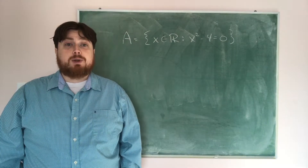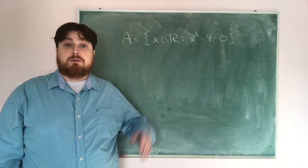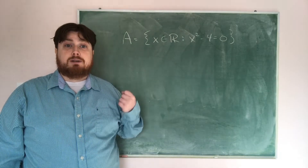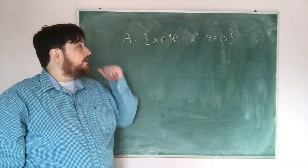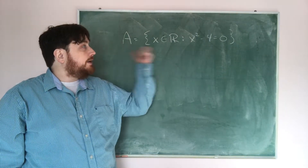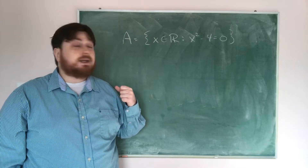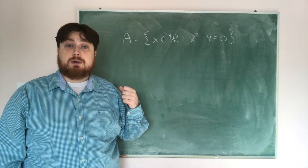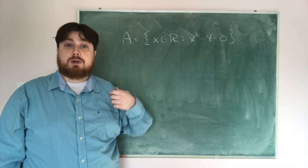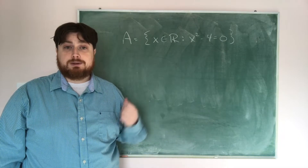The first example we're going to look at is when we have a set given by a defining rule. We're going to have A as the set of all x in ℝ such that x squared minus 4 is equal to 0, and what we want to do is find the elements of the set.